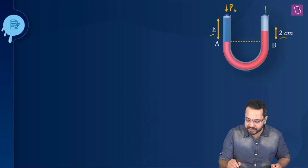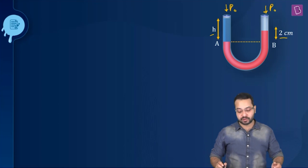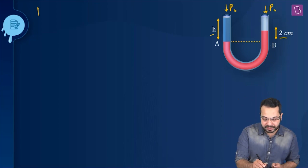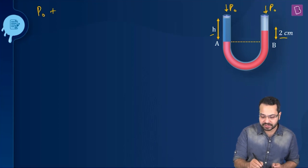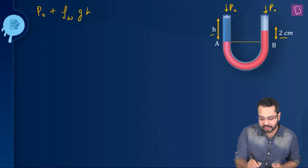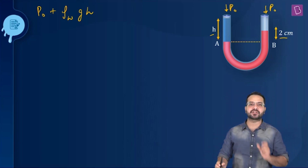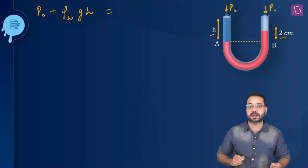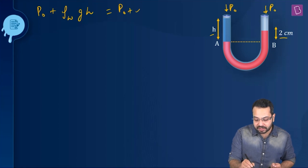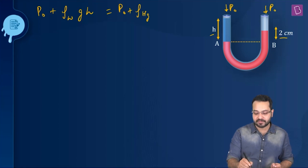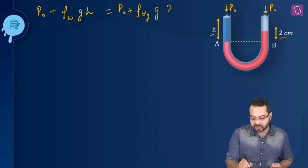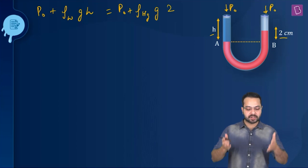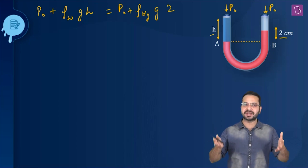There will be atmospheric pressure acting because both the tubes are exposed to the atmosphere. The pressure at point A is going to be P₀ plus ρ of water times g times h — basically the pressure due to the column of water. This has to be equal to pressure at B, which will be P₀ plus the density of mercury times g times h, where h is 2 cm. I have not converted this into SI units because the units are the same on both sides and they will get cancelled, so the height will come out in cm.